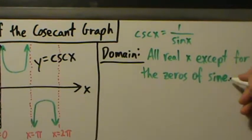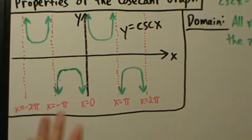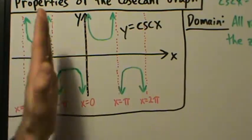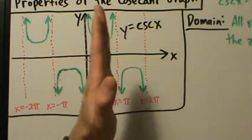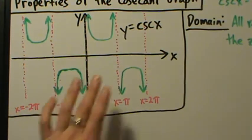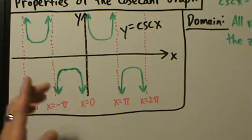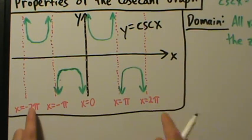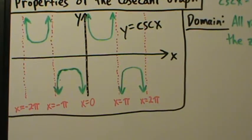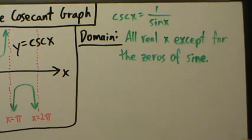At these values of x — the zeros of sine — we see that the cosecant function is in fact not defined. What we have there are vertical asymptotes instead. The cosecant function is defined everywhere else, but at those zeros of the sine function — 0, π, negative π, 2π, negative 2π, 3π, negative 3π, and so forth — we have vertical asymptotes. So the domain is all real x except for the zeros of sine.